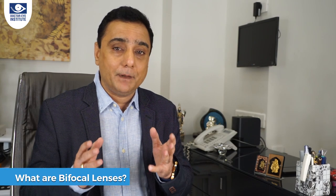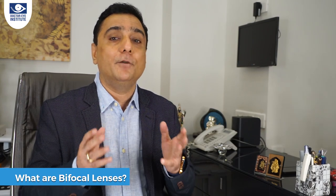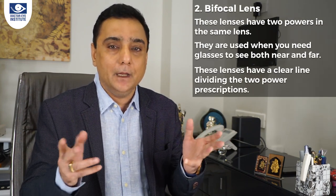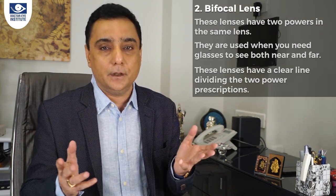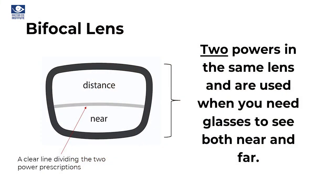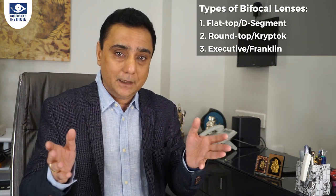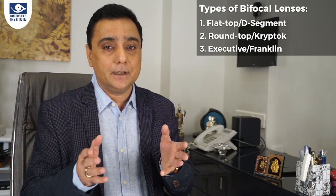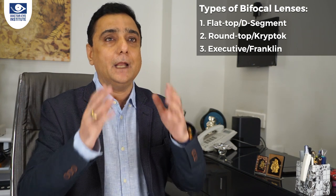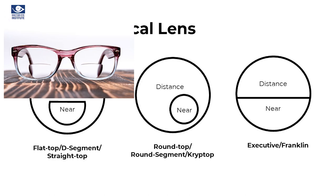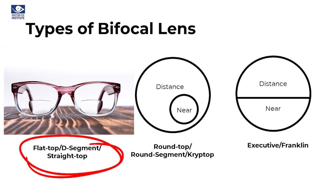The next type is called bifocal lenses. Bifocal — simple English — means two distances can be covered: distance and reading. There are various types of bifocal lenses: they are called clip top and flat top deep. These lenses are useful mainly for reading and to see distance objects. This is an example of a flat top deep bifocal.